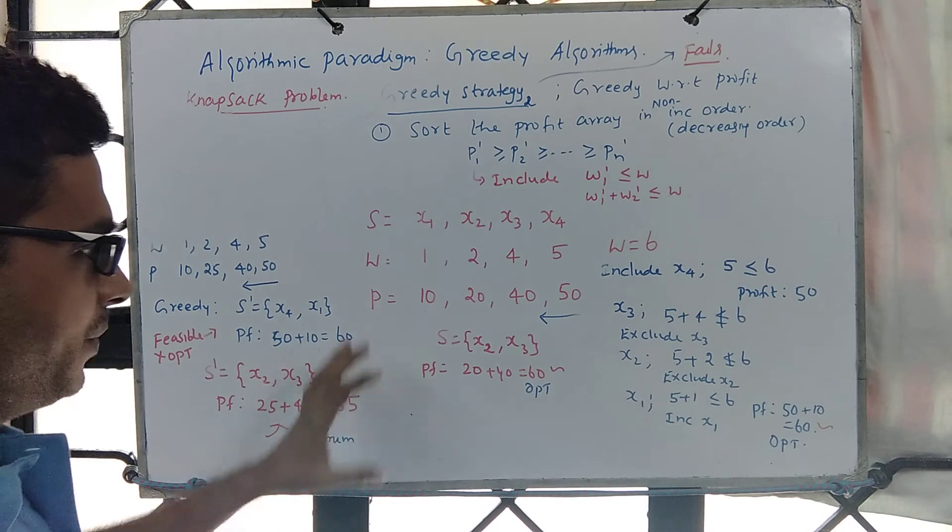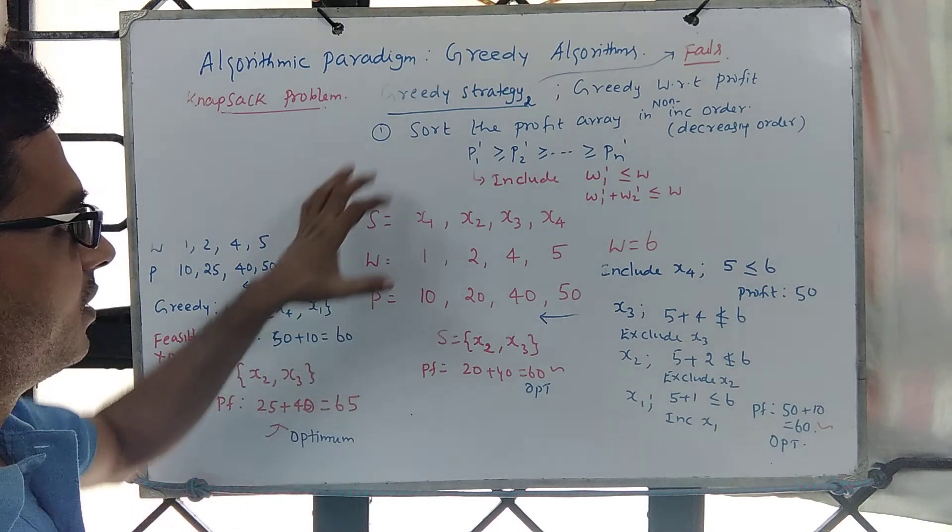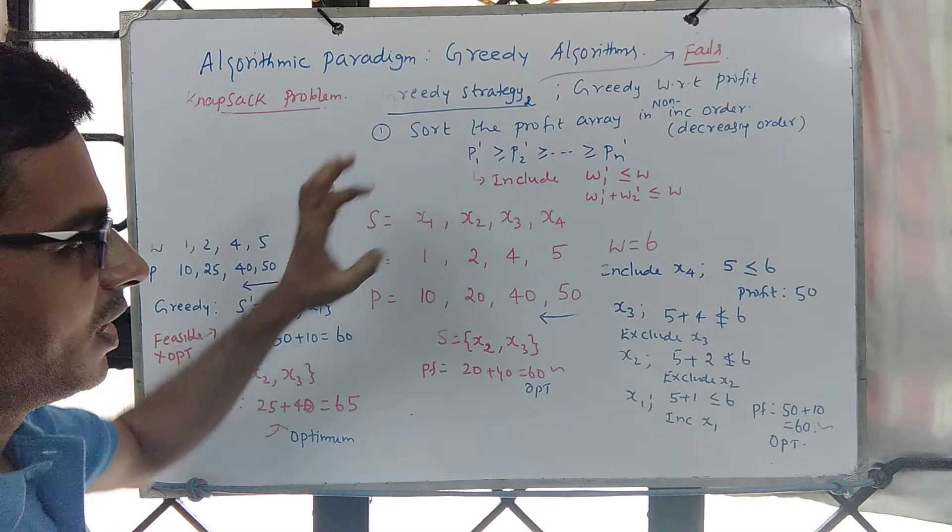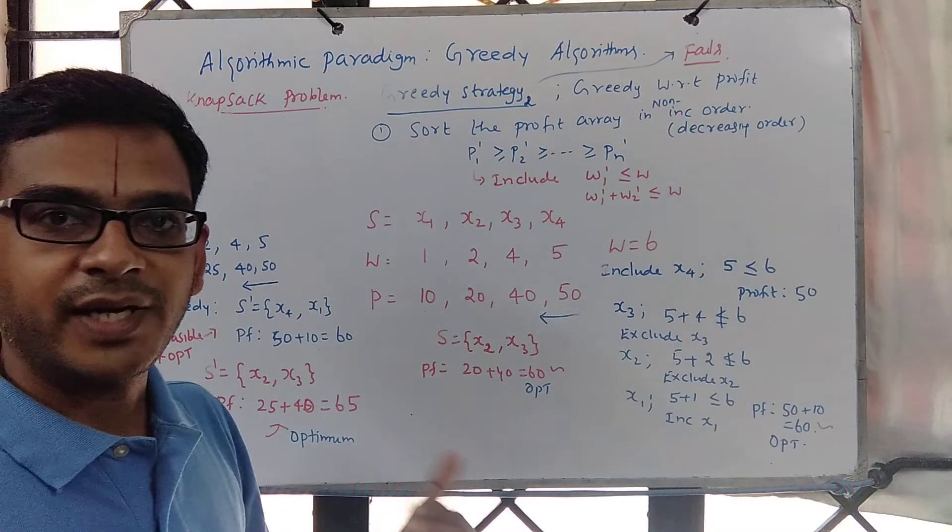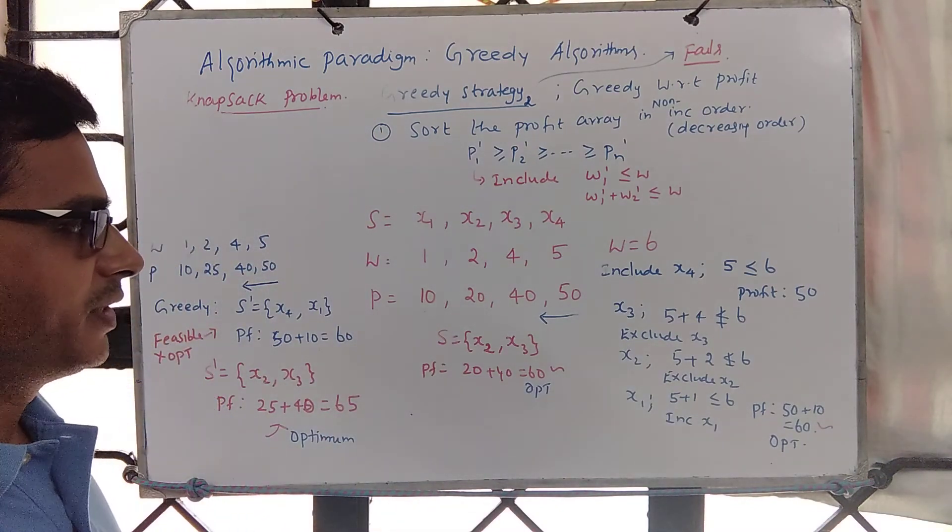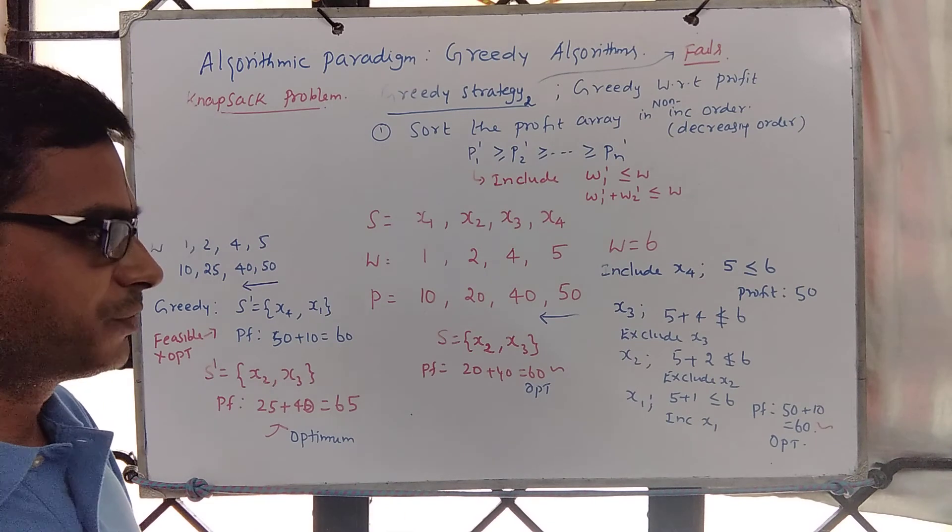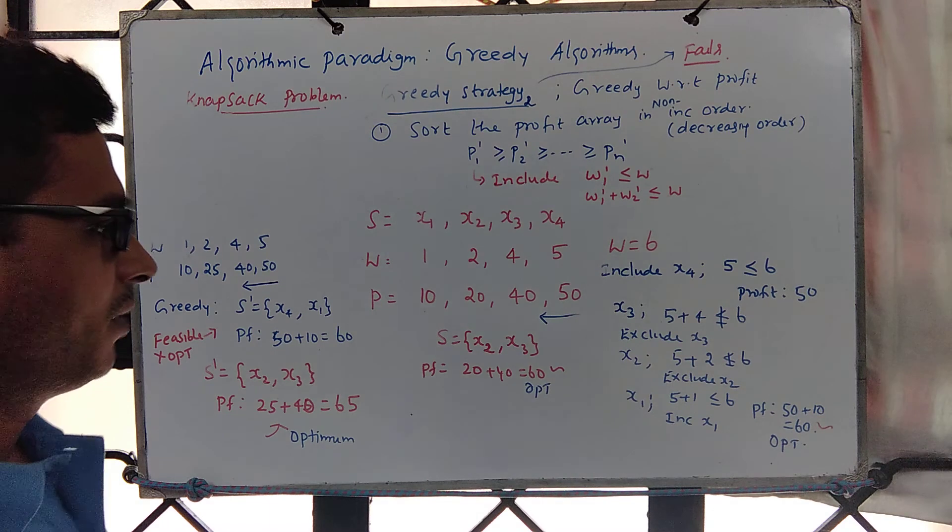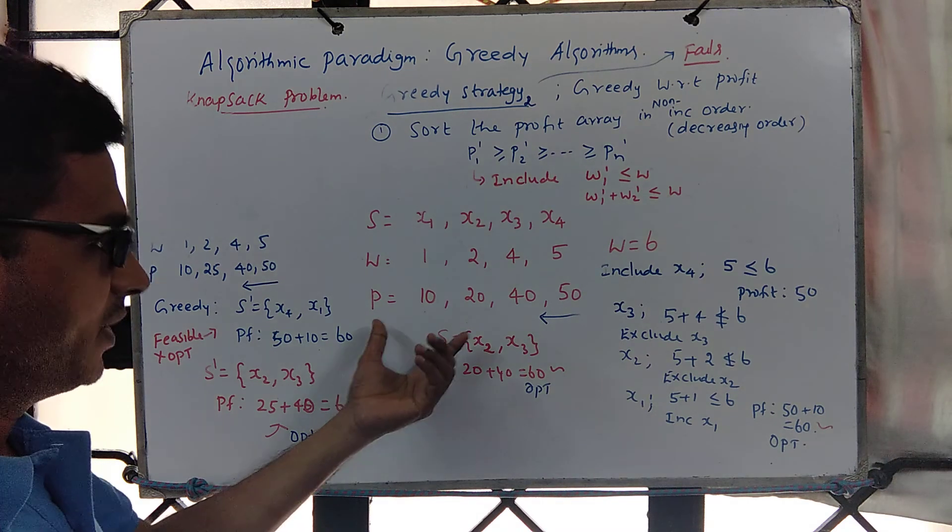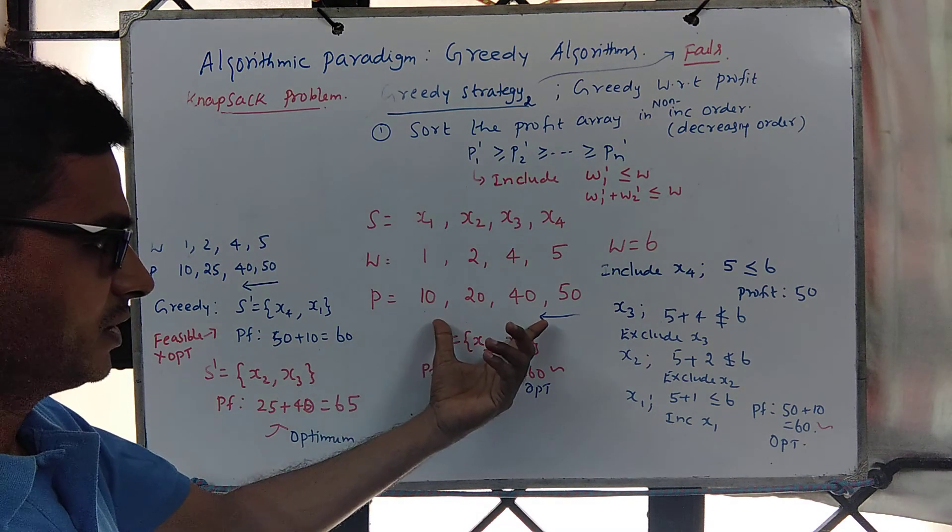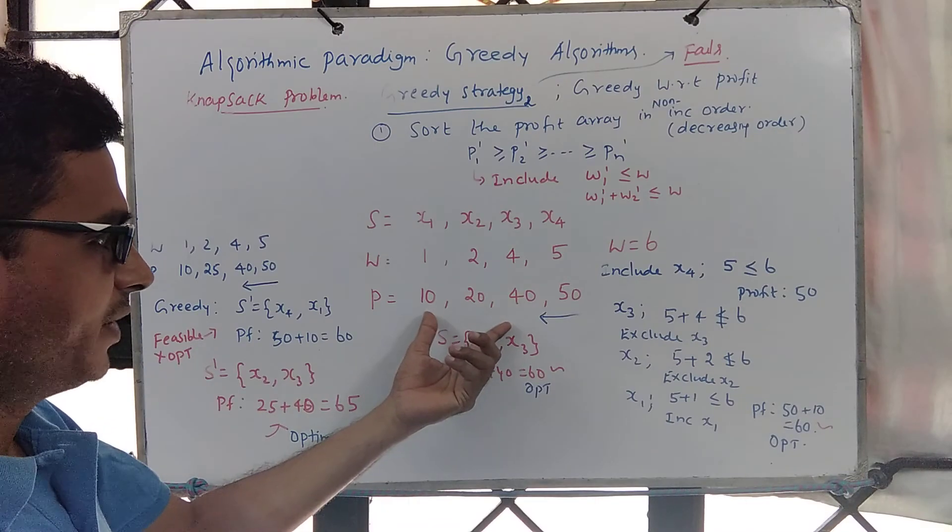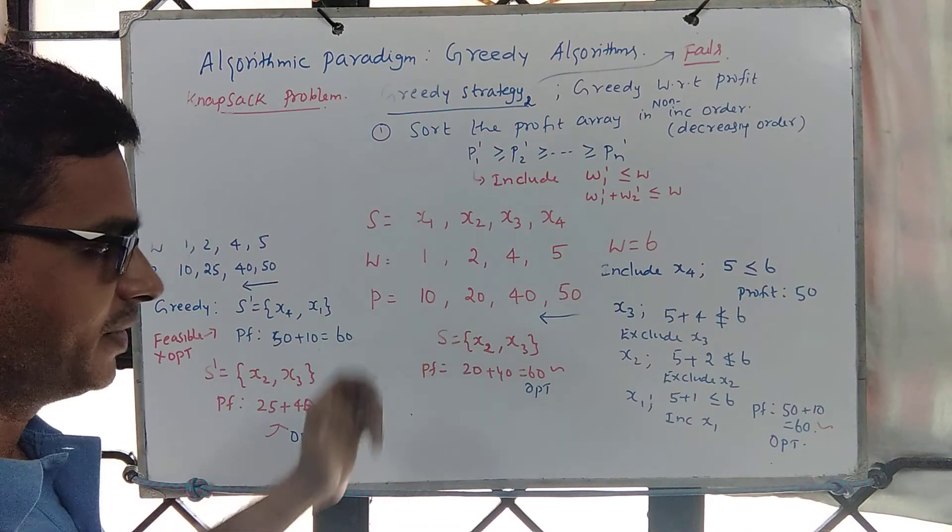So one has to be careful because it is just the intuition. Intuition is saying if we include object with max profit, then object with second max profit, we will eventually reach global optimum. But if you look carefully, there will be examples which support the greedy strategy, but one has to carefully fine-tune and look for counter-examples if they exist.